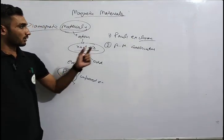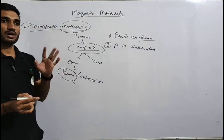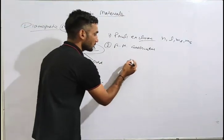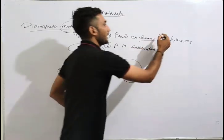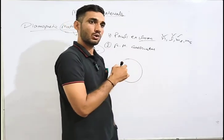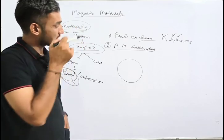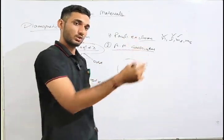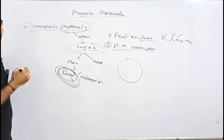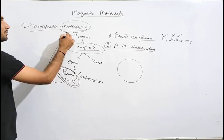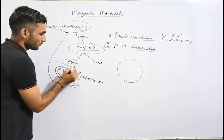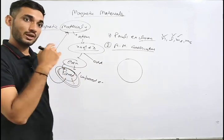By Pauli exclusion principle, for any two electrons revolving together, all four quantum numbers — n, l, ml, and ms — cannot be the same. If both paired electrons are in the same orbit, then n, l, and ml are the same, so ms must be different. If one moves clockwise, the other moves anticlockwise, so their angular momentum is conserved and their net magnetic moment becomes zero — hence we classify this as a diamagnetic material.